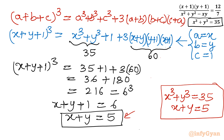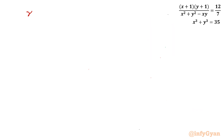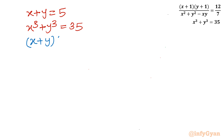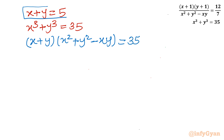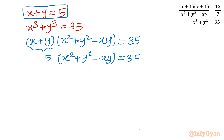We now have the simpler system: x+y = 5 and x³+y³ = 35. Applying the identity again: (x+y)(x²+y²-xy) = 35. Substituting x+y = 5 gives 5(x²+y²-xy) = 35, so dividing both sides by 5: x²+y²-xy = 7.